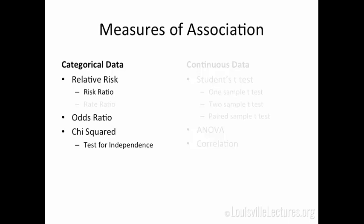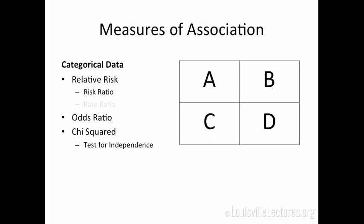You'll see the term relative risk. That's a generic term that means risk ratio or rate ratio. Some people even use it to describe an odds ratio. But if you want to be very specific, especially when doing research, you want to use risk ratio or rate ratio. That's more specific than just saying relative risk. To a statistician, relative risk doesn't really tell us what you want.